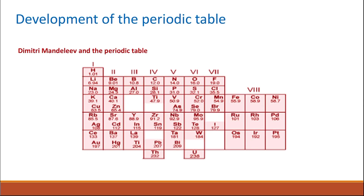In 1869, Dmitri Mendeleev began creating his own periodic table, trying to overcome the problems of the early periodic table. He took 50 elements and arranged them into a table where he left some gaps. When elements were later discovered, they actually found their way into these gaps. He still arranged the elements in order of atomic mass, not atomic number, because the atomic number had not yet been discovered.